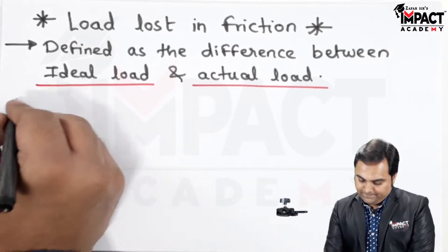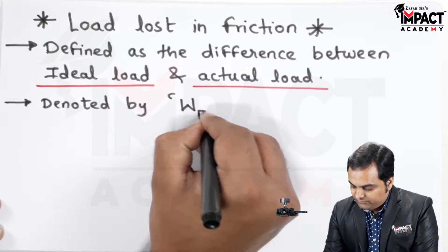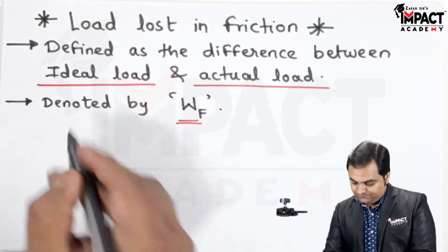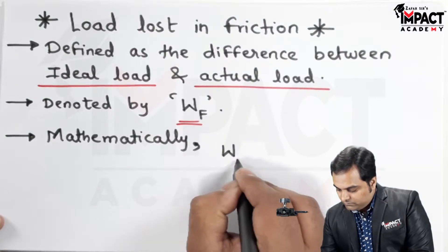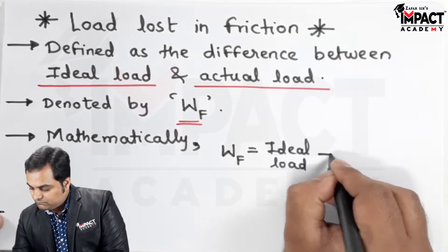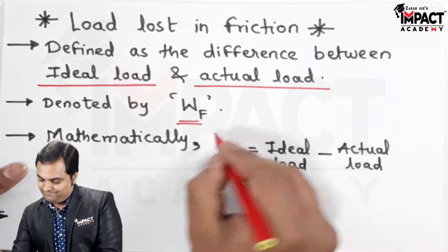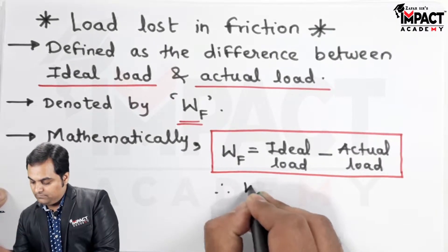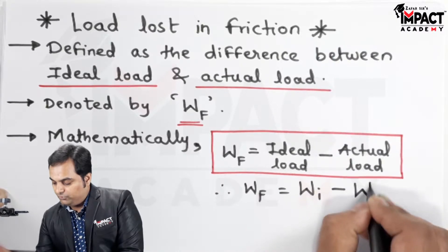Then, it is denoted by W_F, that is the load lost in friction, and it is given by the formula. The load lost in friction is ideal load. Ideal load is denoted by W_I whereas actual load is denoted by W.